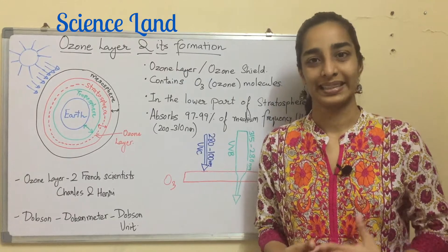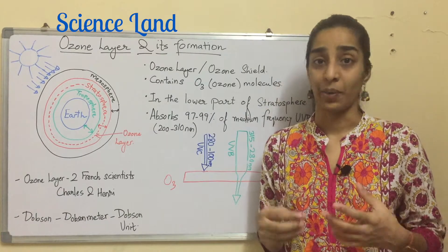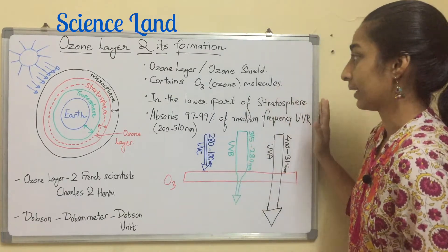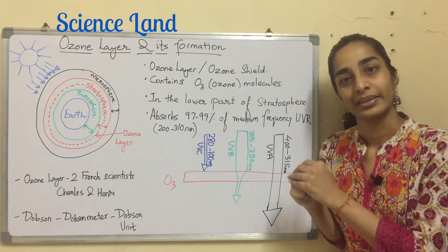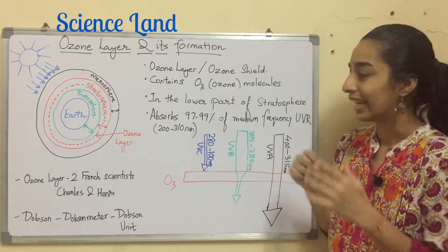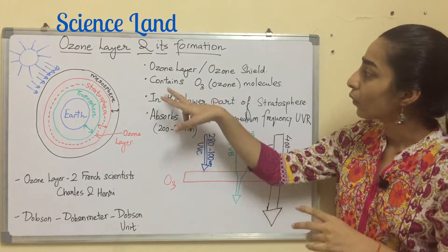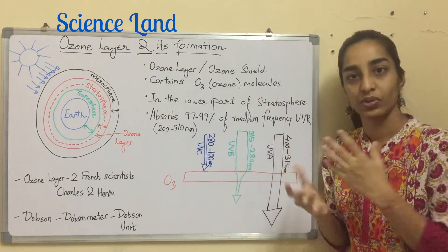Hello friends, welcome to Science Land. I am Nikita and today we are going to talk about ozone layer and how it has formed. So let's start. Ozone layer is also called as ozone shield because it protects the earth against harmful UV radiation from the sun. It acts as a shield. Ozone layer contains O3 molecules.